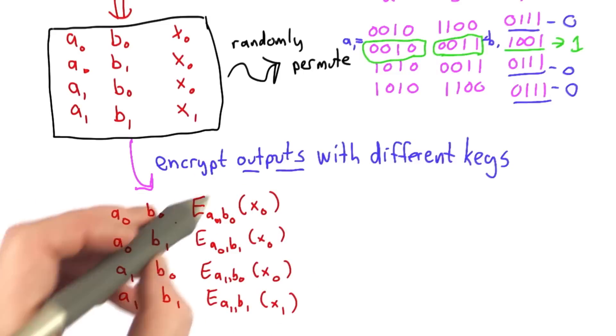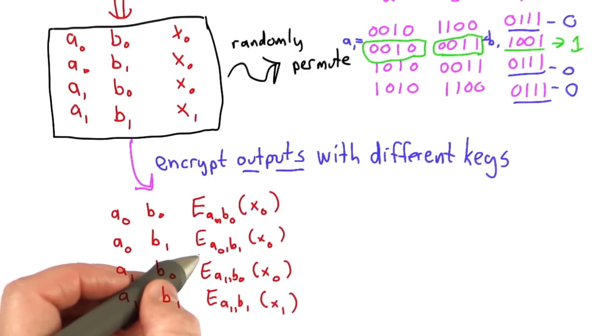That means in our garble table, we'll have our outputs encrypted with different keys corresponding to inputs that correspond to that output value.